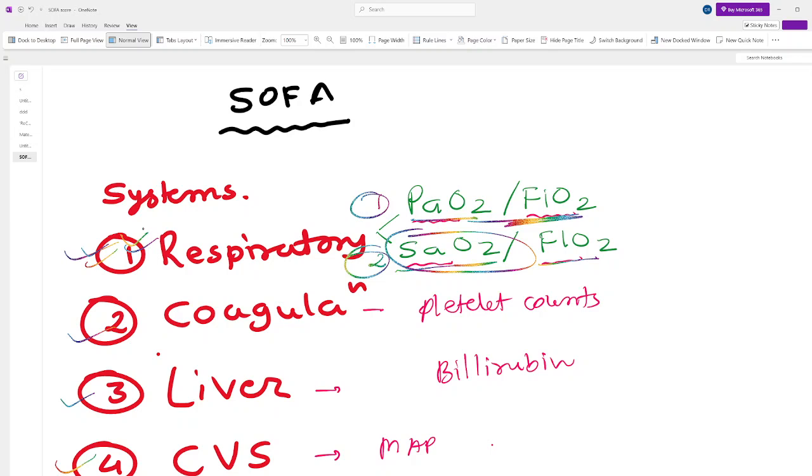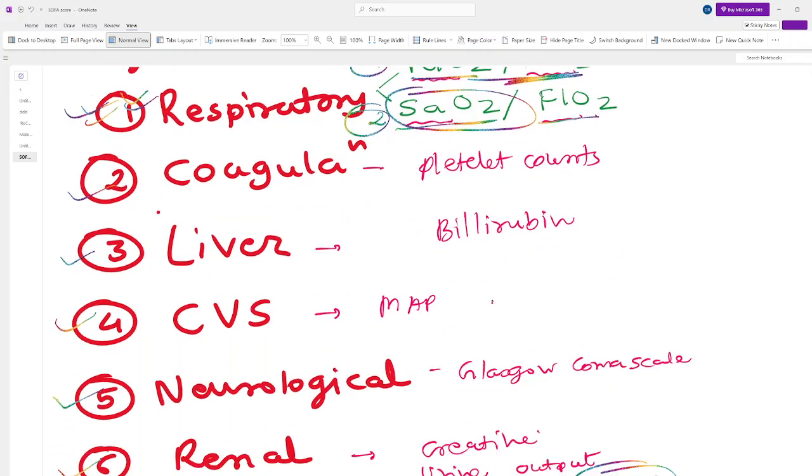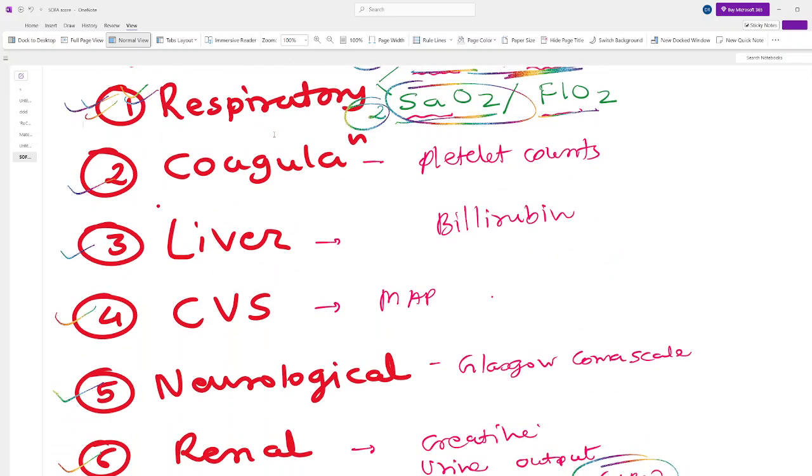Now let's go with coagulation. How to know the coagulation function? We have to see a lot of things like partial prothrombin time, prothrombin time, but here we just use one measurement - that is platelet count.